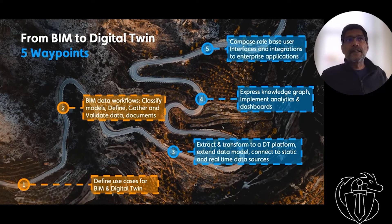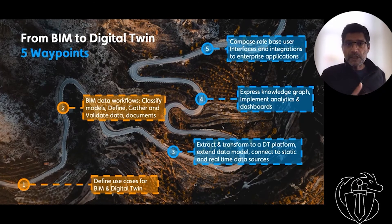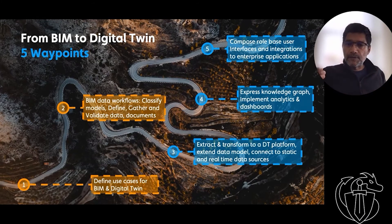The last step is once you've got the data and organized the data, you are then able to compose role-based user interfaces and build integrations into applications to create the outcome. So a digital twin is founded on good BIM, on good information management. Because if you don't have that in place, everything else is going to be garbage. You can get a lot of good data and build a lot of good integrations, but if it's built on top of bad data, it's not going to be successful. So BIM and information management is vital for this post-occupancy strategy based on digital twins.